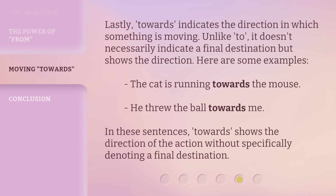Lastly, 'towards' indicates the direction in which something is moving. Unlike 'to,' it doesn't necessarily indicate a final destination, but shows the direction. Here are some examples. The cat is running towards the mouse. He threw the ball towards me. In these sentences, 'towards' shows the direction of the action without specifically denoting a final destination.